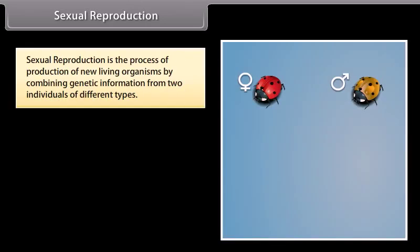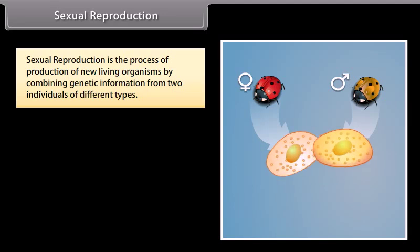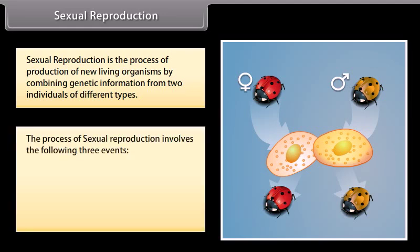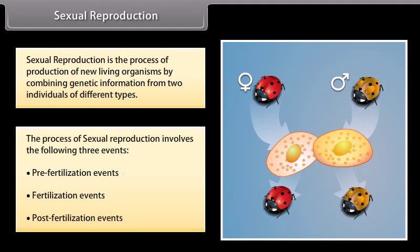Sexual reproduction is the process of production of new living organisms by combining genetic information from two individuals of different types. The process of sexual reproduction involves three events: pre-fertilization events, fertilization events, and post-fertilization events.